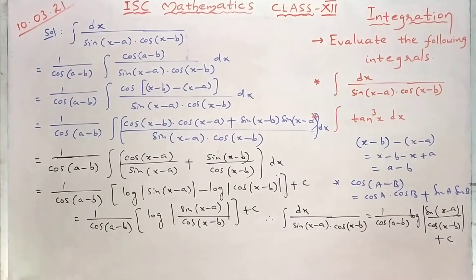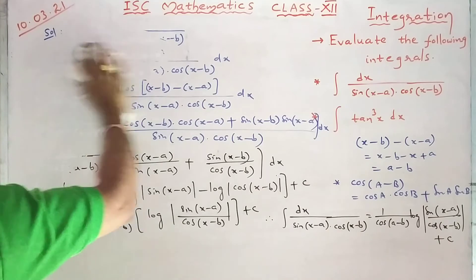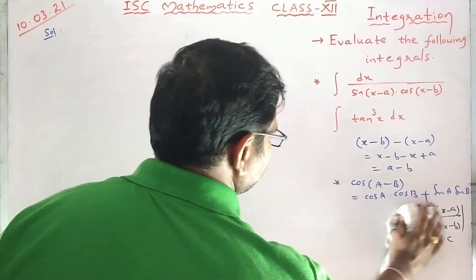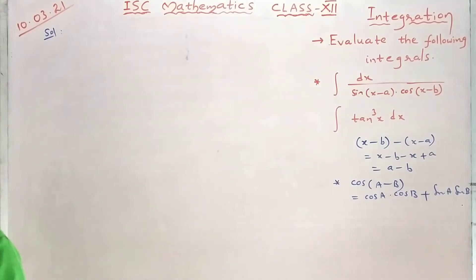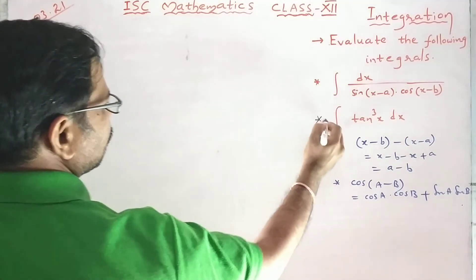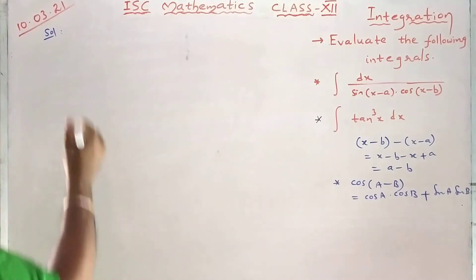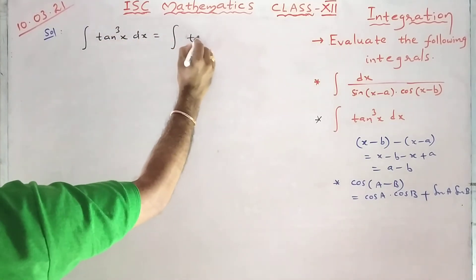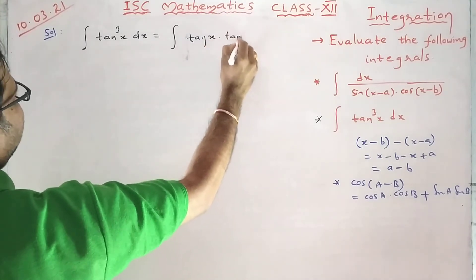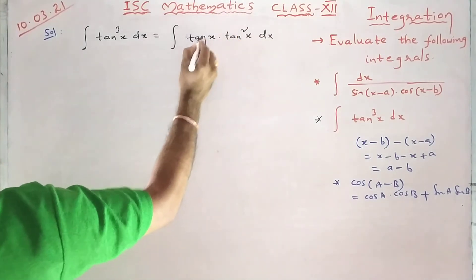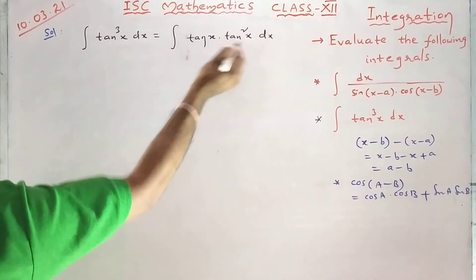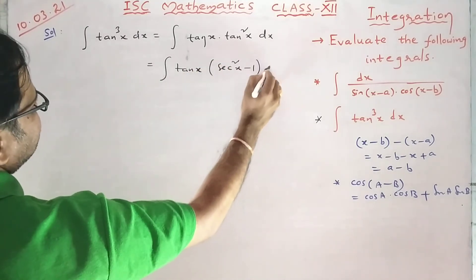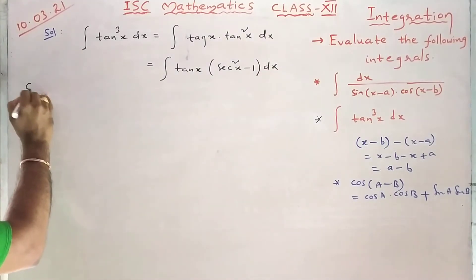Let us see the second question. Integral of tan cube x dx. So how can we do this? I can write it as tan x into tan square x dx. Cube is written as tan x into tan square x.